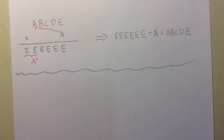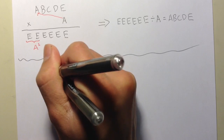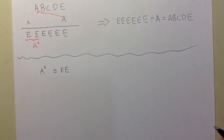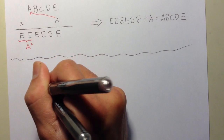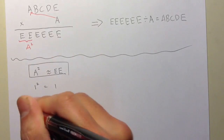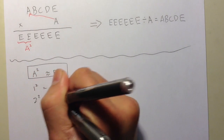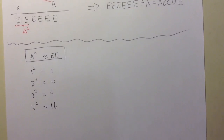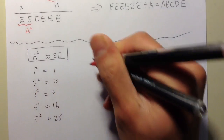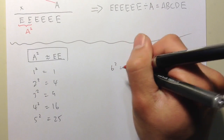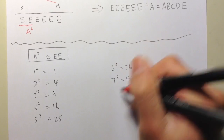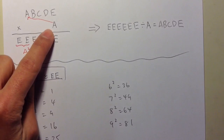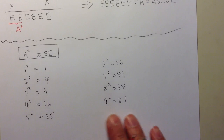First of all, I know my squares. I want A squared to be close to the digit E repeated. Let me write down the squares: 1²=1, 2²=4, 3²=9, 4²=16, 5²=25, 6²=36, 7²=49, 8²=64, 9²=81. And A is a one-digit number, so we won't bother with 10.